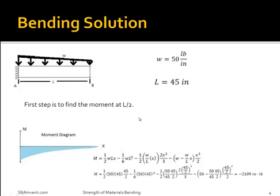The first part to solving this problem is you need to determine what the moment is at L over 2. To determine this moment, you need to find the moment diagram along with its corresponding equation. Once you know what those are, you can determine that the moment at L over 2 would be negative 2,109 inch-pounds. If you're not sure how the moment diagram and its corresponding equation was derived, you can find a problem like this one on the shear and moment diagram reference page.